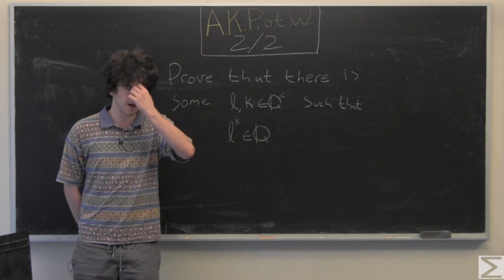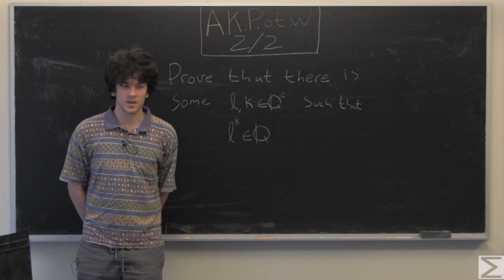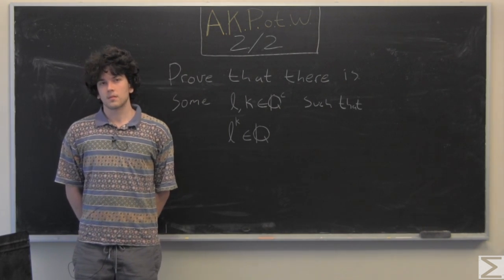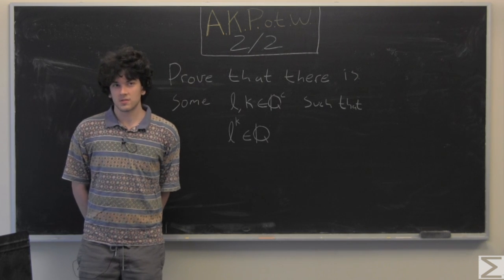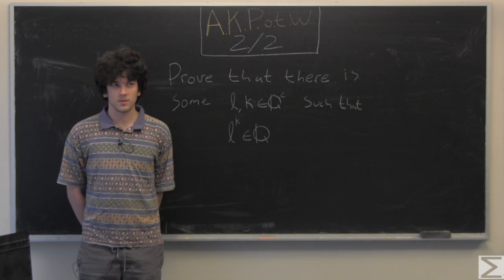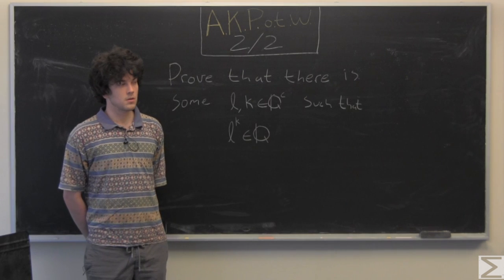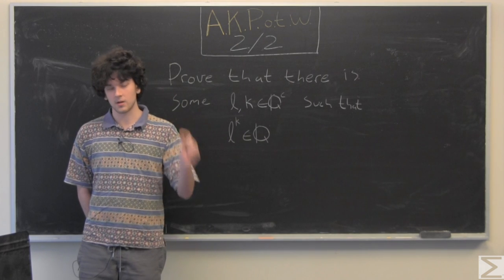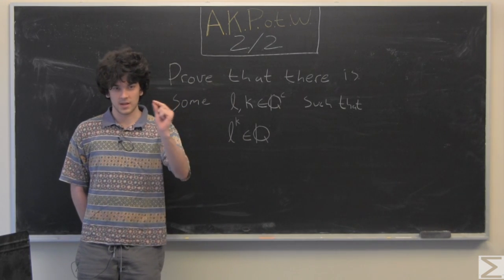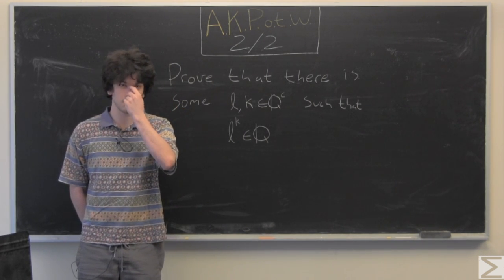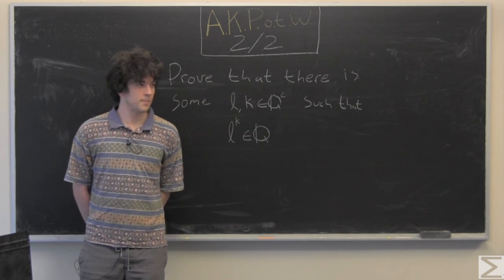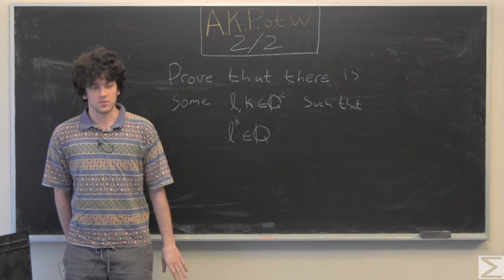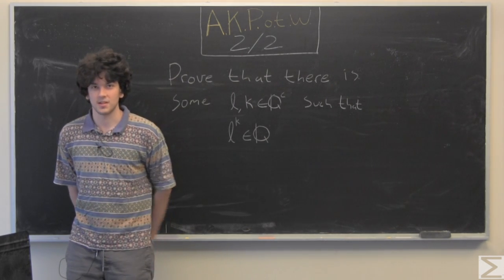The rationals, irrationals, as well as the reals, are all dense sets, meaning if you choose, well, one property of that is if you choose two irrational numbers, no matter how close they are, there's an irrational number in between them. That is not what we're going to be discussing, but rationals and irrationals are fascinating either way.